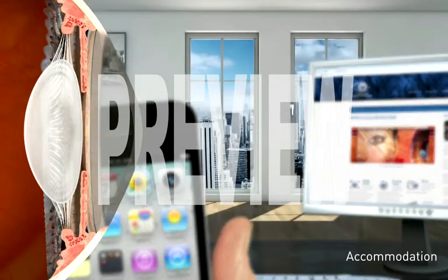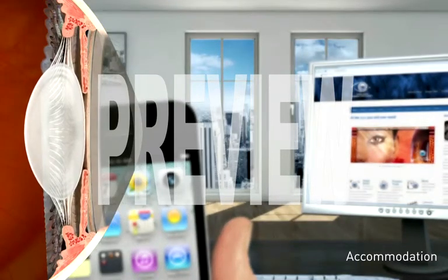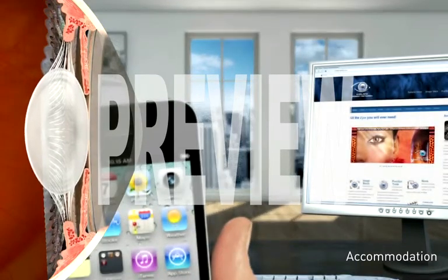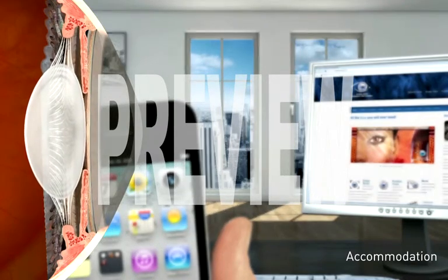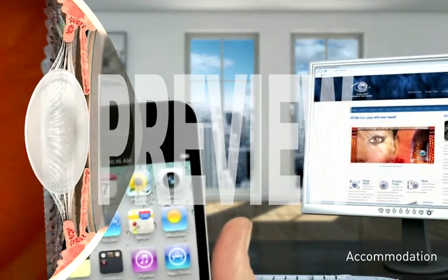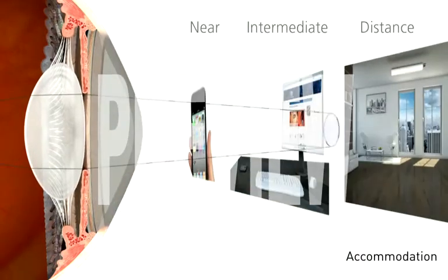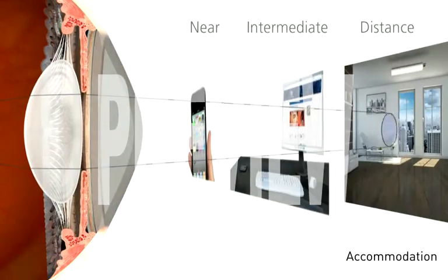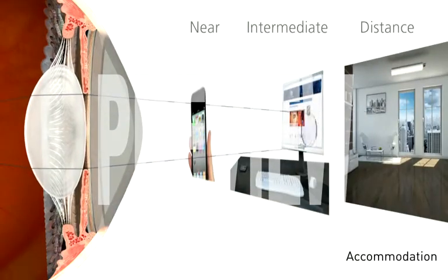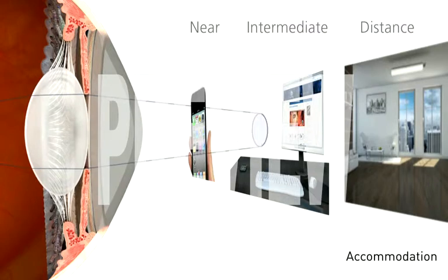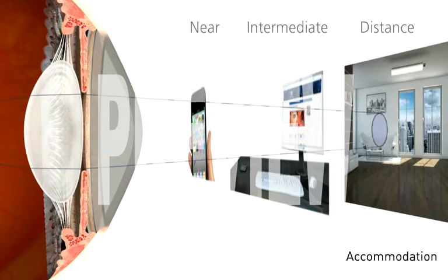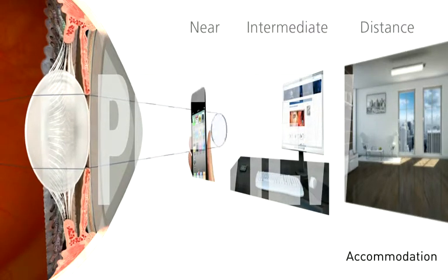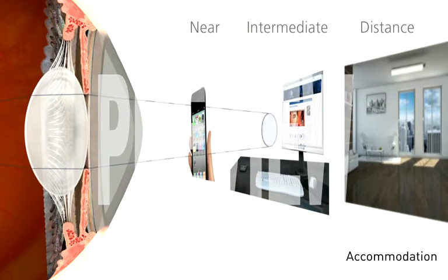When we are young, the lens inside the eye is soft and flexible. To change focus from near to distant and back again, the muscles surrounding the natural lens contract and relax, changing the optical power of the lens. This ability of the lens to change its shape and focus is called accommodation.